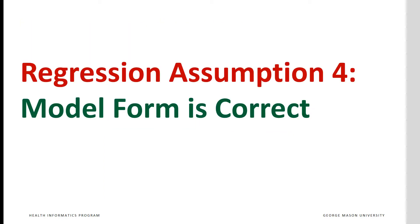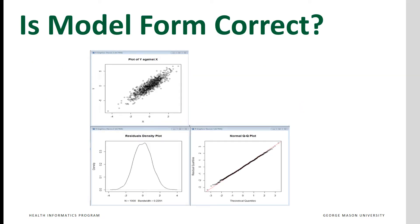A key assumption of regression is that the model form is correct, and only parameters of the model need to be estimated from the data. This is not always correct. If the linearity assumption is met, then you would expect to see a linear relationship between y and the independent variables.